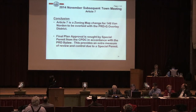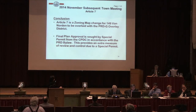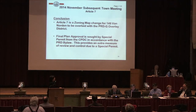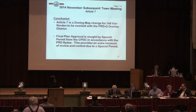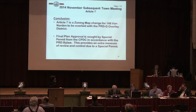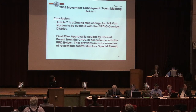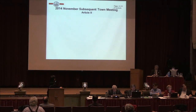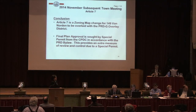In conclusion, the map change that's before you, the subject of Article 7, is to allow 149 Van Norden Road to be overlaid as a PRD-G overlay district. The final plan approval would be through a special permit process through the CPDC in accordance with the PRD zoning bylaw. This provides an extra measure of review and control due to the special permit. Thank you.